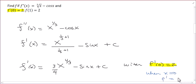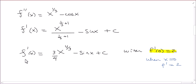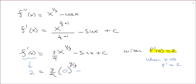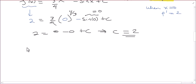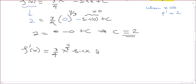Using f prime of 0 equals 2 means when x is 0, the derivative is 2. So: 2 = (3/4)(0)^(4/3) minus sine of 0, plus c. Zero to any power is 0, and sine of 0 is 0, so 2 = 0 minus 0 + c. That tells us c is equal to 2. So f prime of x is (3/4) x to the 4/3 minus sine x plus 2.